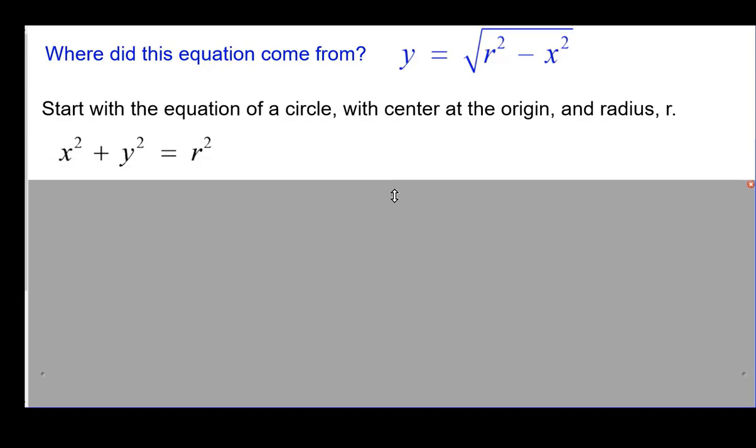First of all, let's talk about where this equation came from, y equals the square root of r squared minus x squared. We're going to start with the equation of a circle whose center is at the origin and has a radius of length r. And that standard equation is x squared plus y squared equals r squared.